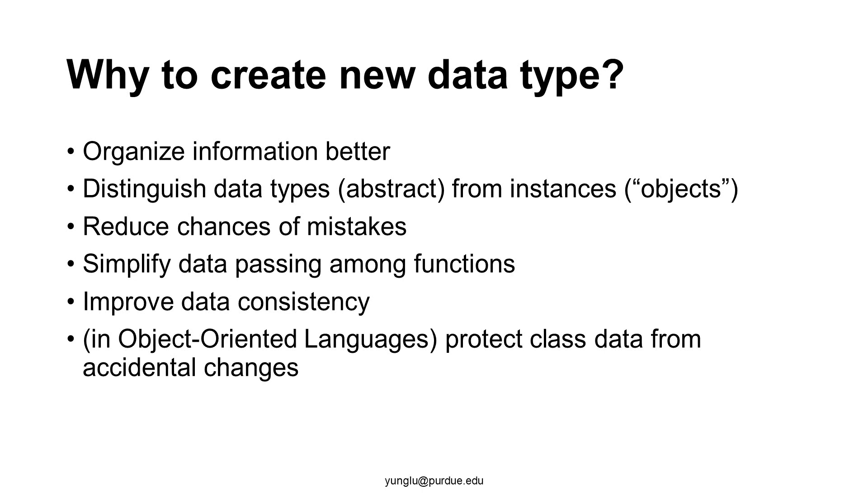Another reason is to maintain consistency. Let's imagine that you create a data type called address. When someone moves, the person's address needs to change the street number, the street name, maybe the city and the zip code. When the information about address is put together, programmers are more likely to remember and the data can be maintained properly.